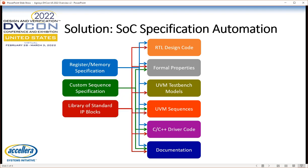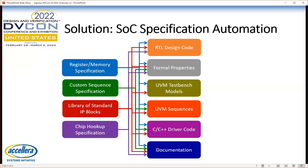Next, we introduced a library of standard IP blocks. From these libraries we can generate anything: the design code, the files necessary for formal and simulation verification, the driver code, and documentation. And most recently, we allow you to specify the top-level chip hookup requirements for your SOC — how all the blocks are interconnected. From that, we generate the RTL design code for the top-level of the SOC, appropriate documentation, plus formal properties to verify the connections. And by the way, that doesn't just work for our library blocks — it applies to your custom blocks as well.